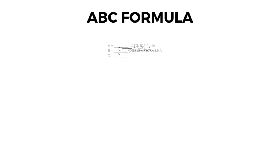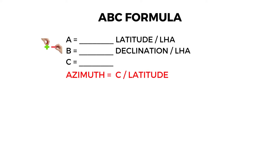As you can see, the ABC formula is very simple. Basically, we only have to find the Local Hour Angle (LHA) and declination, since the latitude is already given. Then we will use addition or subtraction for finding the C correction.